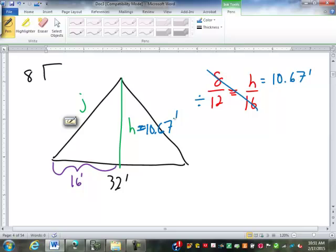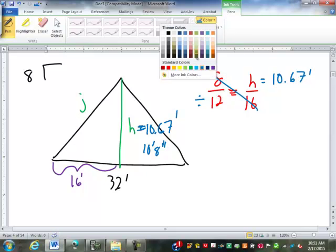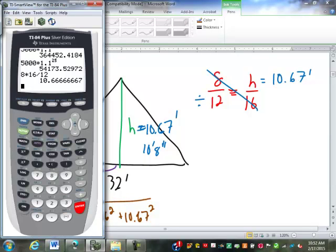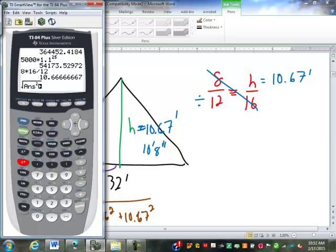So now to find J, and of course your answer would be listed as 10.67 becomes 10 foot 8 inches. To find J then, we're going to use the 10.67 and it will be the square root of 16 squared and the 10.67 squared. Now in order to keep from round off errors, I'm going to leave that 10.67 in my calculator. Second square root, second answer squared plus 16 squared.